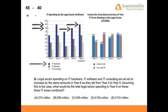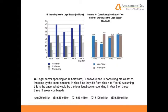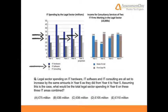We're working in millions, as you can notice at the top of the graph. Let's move on to the next variable: IT software, shown in grey. The grey for year 4 goes to 25, and year 5 is 30. So 30 minus 25 equals 5 — a £5 million increase.